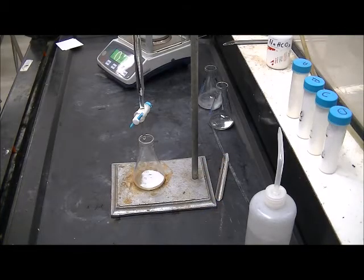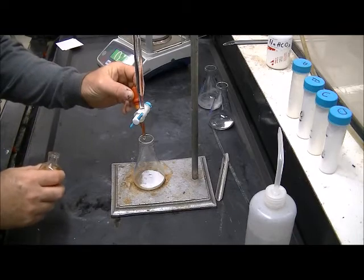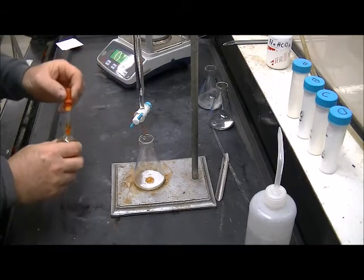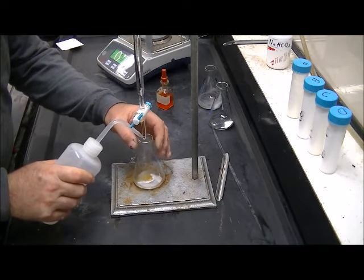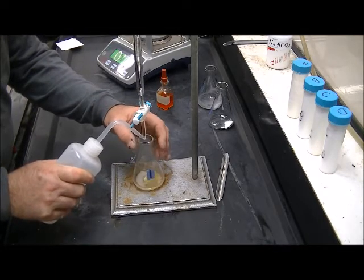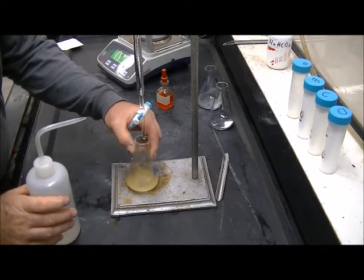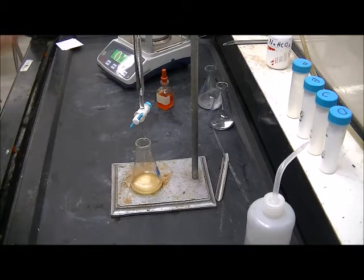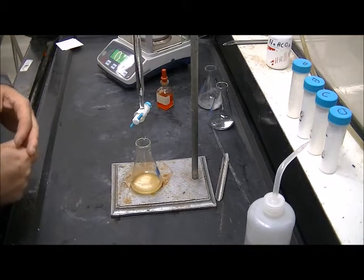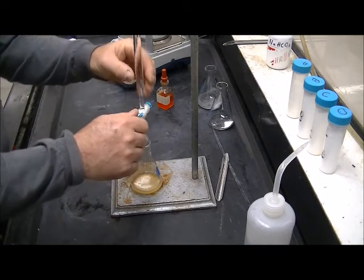I'm going to add some indicator to my flask. Just two or three drops. And then some extra water to help dissolve my solids. And now I'm ready to titrate. I know it should take close to 30 milliliters of the titrant. So I'm going to run the first 25 or so in rather rapidly.